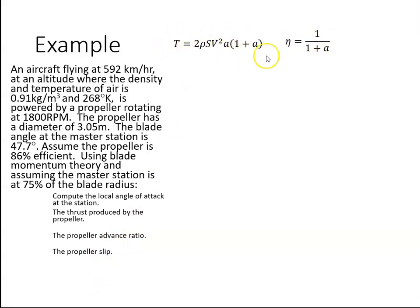They gave us these two formulas: T = 2ρSV²a(1+a) and η = 1/(1+a). These are equations that I would have derived in previous videos on the playlist.